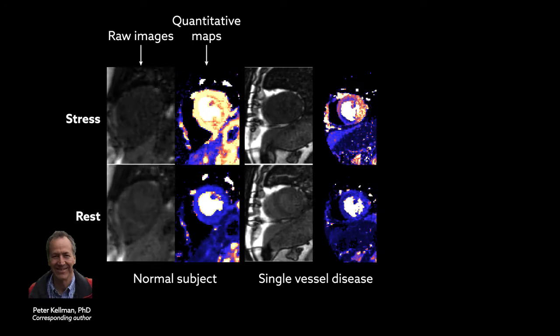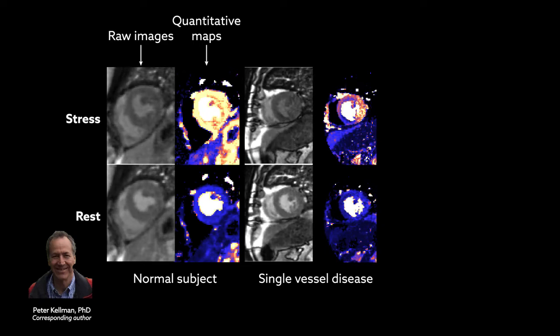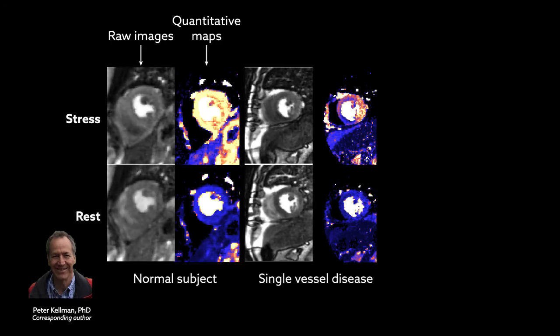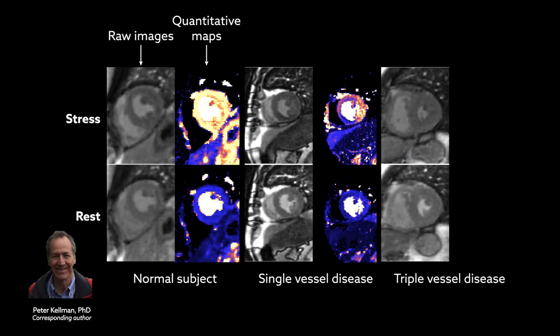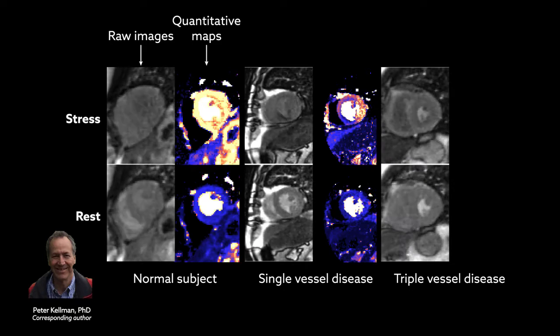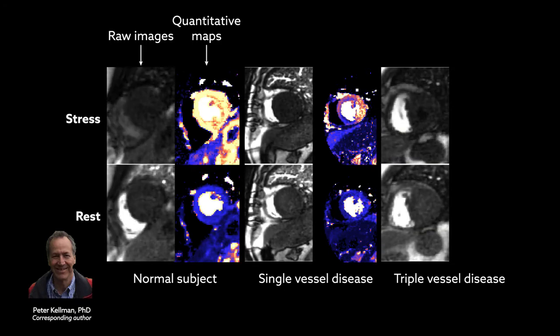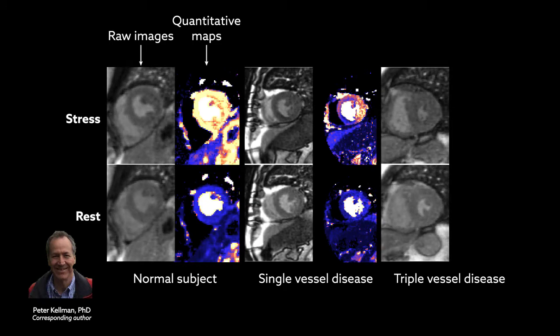A key advantage of the imaging technique developed in this work is that it can diagnose patients that have a uniformly decreased blood flow to the heart muscle, as in the case of triple vessel disease. This is a condition that is often missed when the absolute blood flow isn't measured, but which is easily seen in the quantitative maps.